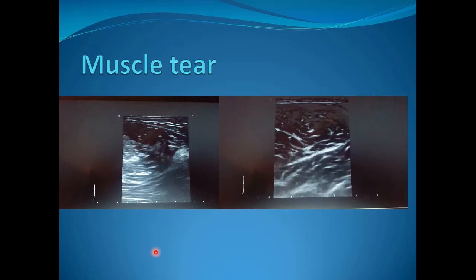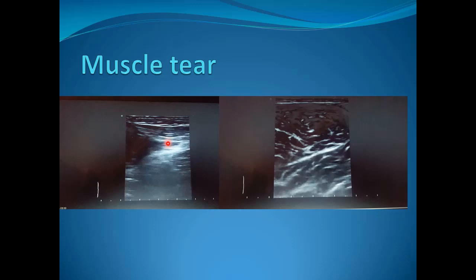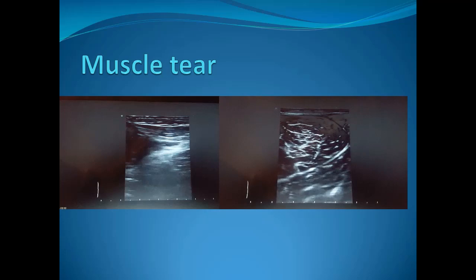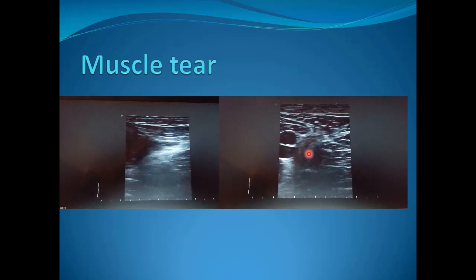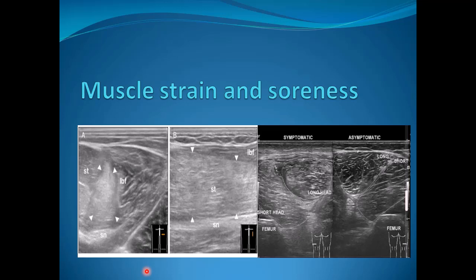This is an example of a chronic tear on longitudinal scan, where we can see the retracted fibers in the muscle with a thinned-out distal part. The transverse view for the same lesion also shows the thinned-out distal part.